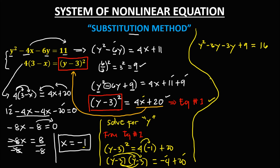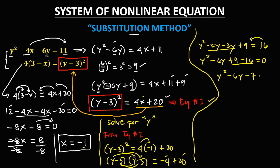Then simplify: we have y squared, negative 3y and negative 3y combine to negative 6y, then plus 9. Transpose this positive 16, that becomes negative 16, then equals 0. So we have y squared minus 6y, and positive 9 minus 16 is negative 7, then equals 0.